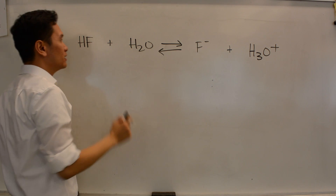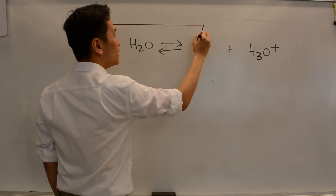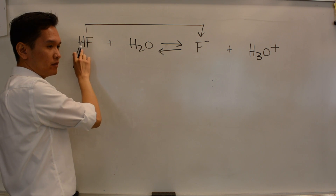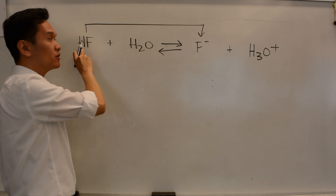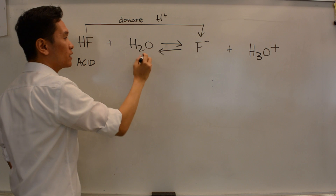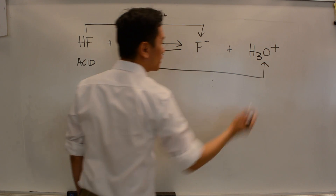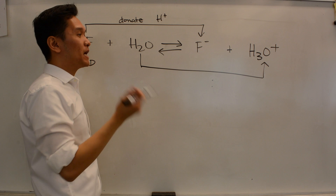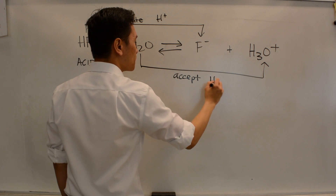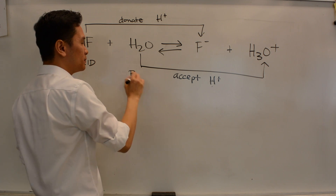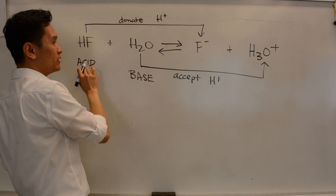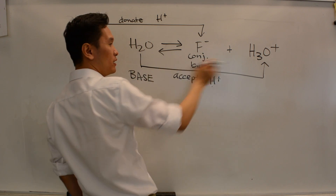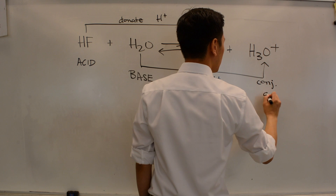Let's do another example: HF + H2O → F- + H3O+. The conjugate pair is HF and F-. HF donated its proton to become F-, so HF is the acid. The other pair is H2O and H3O+. Water accepted a proton to become H3O+, so water is the base. Therefore, F- is the conjugate base and H3O+ is the conjugate acid.